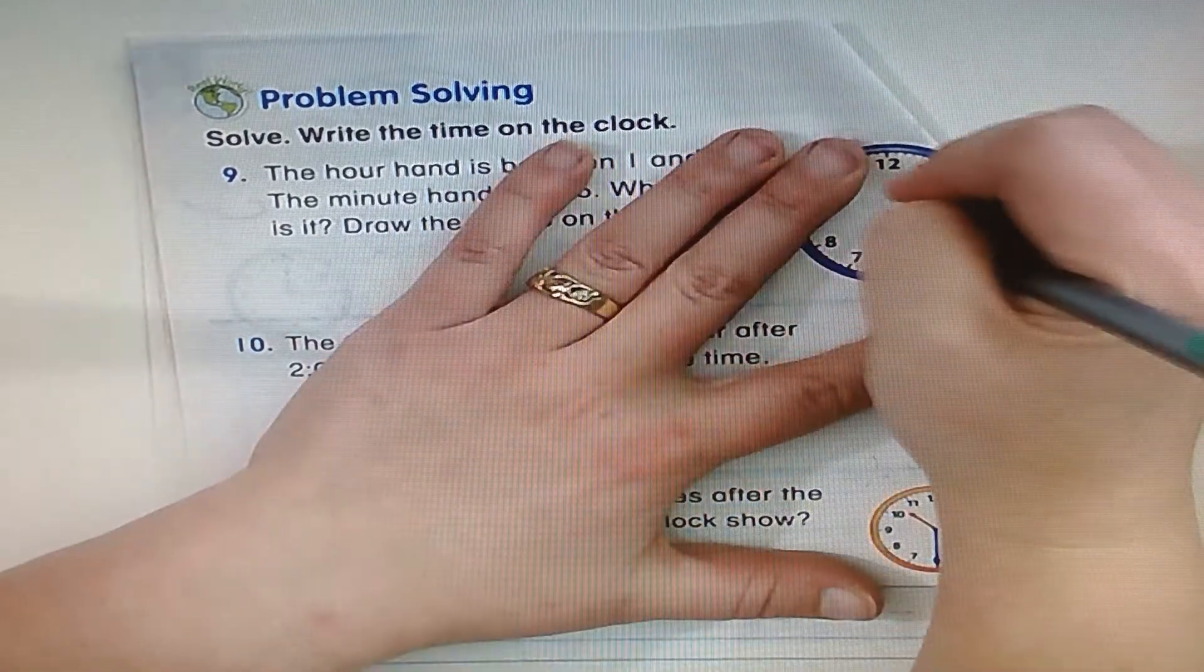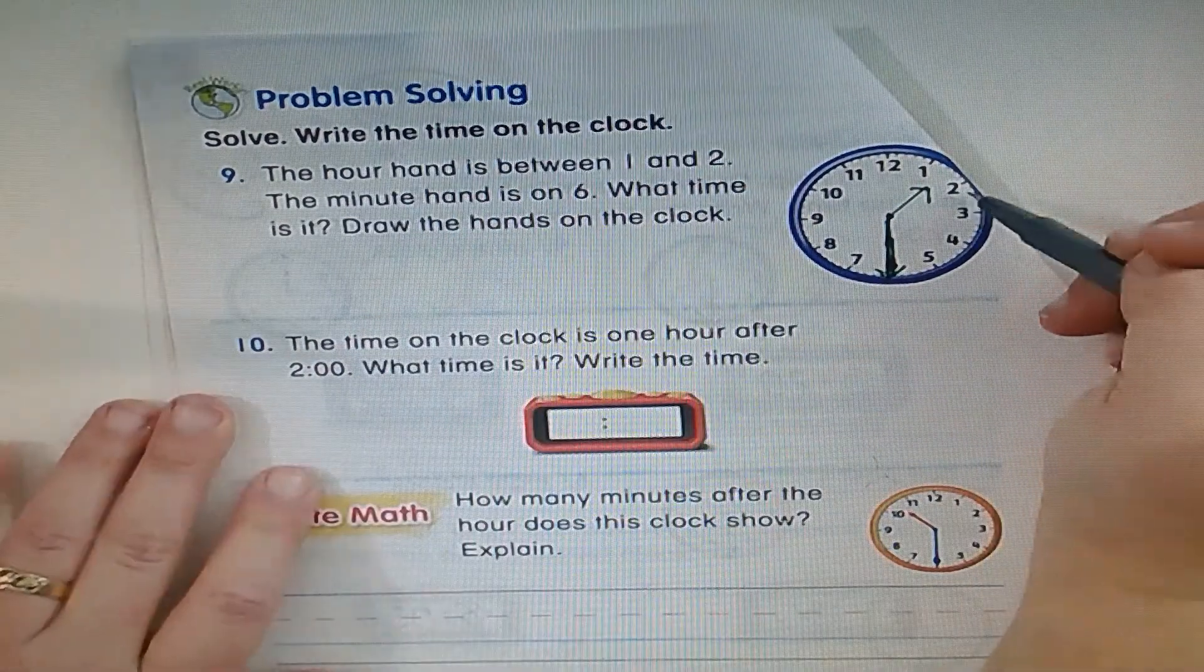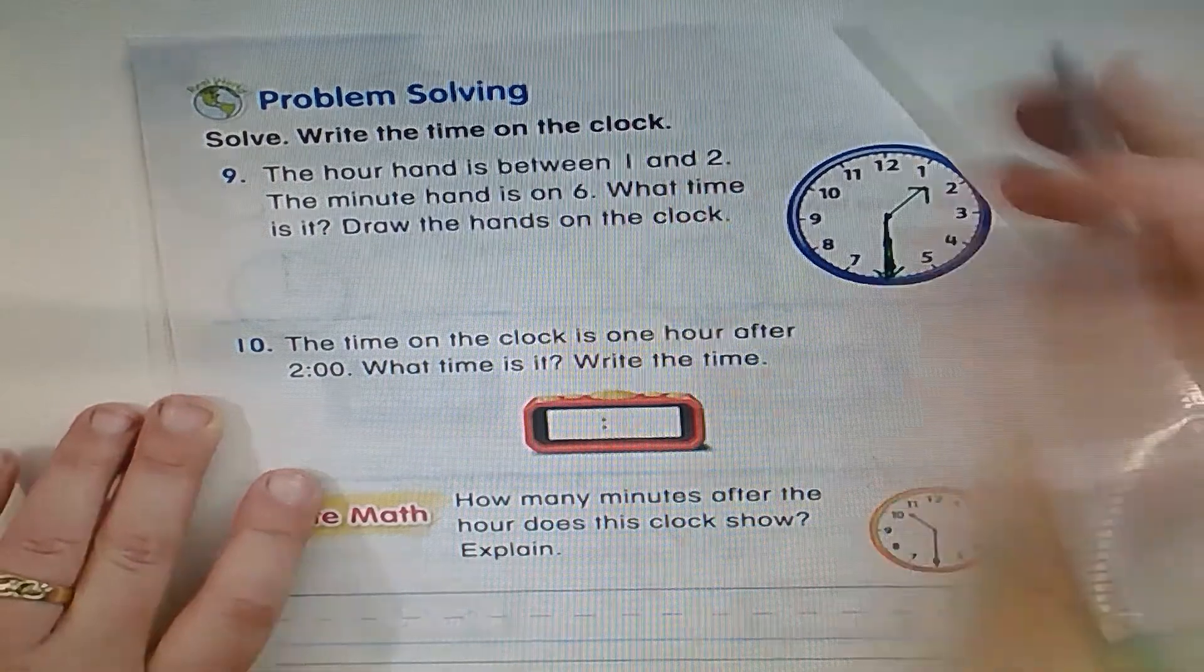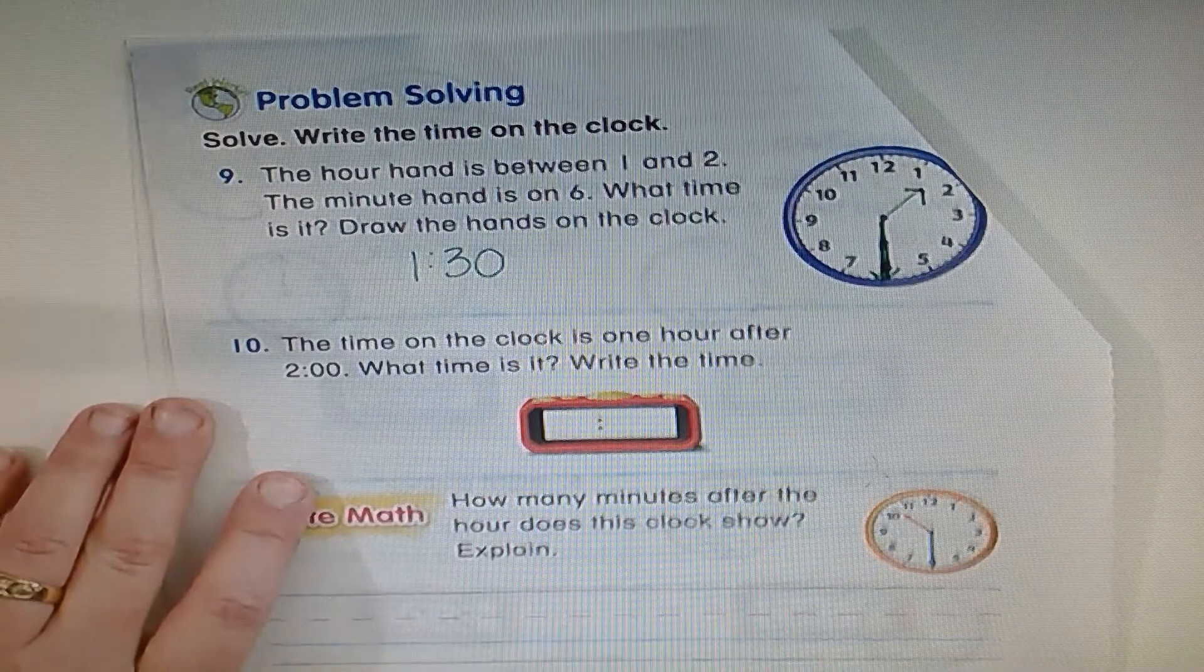Now between the one and the two here. So it's not yet two, so we know it's still one. And this is 30, so it's 1:30. Excellent job.